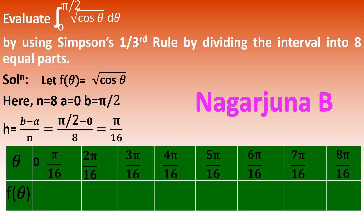Similarly, write the table as shown — it will be easier for calculation. Next, we calculate f(θ). When θ = 0: f(0) = √(cos 0) = 1. When θ = π/16: f(π/16) = √(cos(π/16)) = 0.9999. Note: do not round off — just write 4 digits after the decimal point, discarding any further digits without rounding.